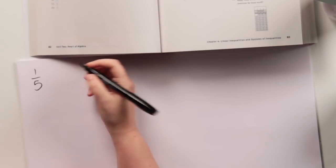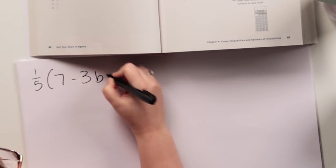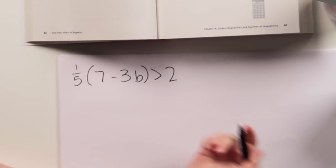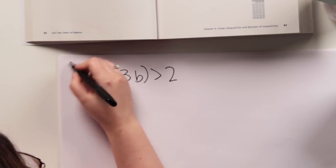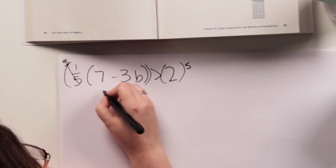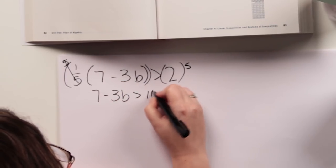One-fifth times seven minus three B is greater than two. So first thing, I want to get rid of that one-fifth, so I'm gonna multiply everything by five because I could distribute it, but that's just gonna make more work for me later.